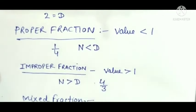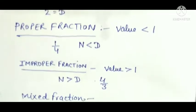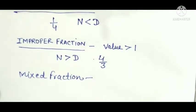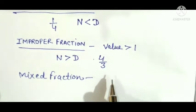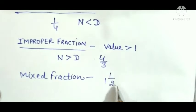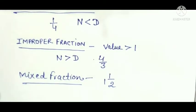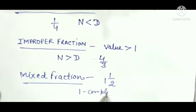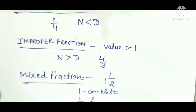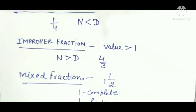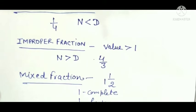Next is mixed fraction. A mixed fraction is a fraction in which one part is complete and the other part is a fraction. For example, 1 and 1/2 — here the whole number part (1) is complete and the fractional part (1/2) is a fraction. This combination is called a mixed fraction.